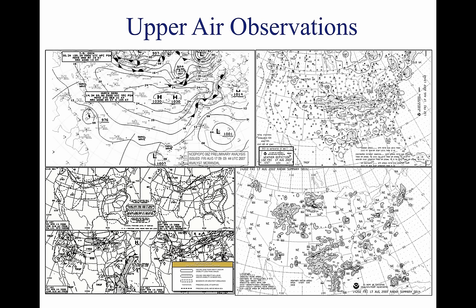Observations of upper air weather are more challenging than surface observations. There are only two methods by which upper air weather phenomena can be observed: radiosonde observations and pilot weather reports. A radiosonde is a small, cubic instrumentation package suspended below a six-foot hydrogen or helium-filled balloon. As it ascends, the instrumentation gathers various pieces of data such as air temperature and pressure, as well as wind speed and direction. Pilots also provide vital information regarding upper air weather and remain the only real-time source of information regarding turbulence, icing, and cloud heights. This information is gathered and filed by pilots in flight.